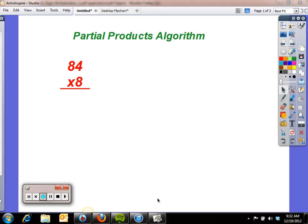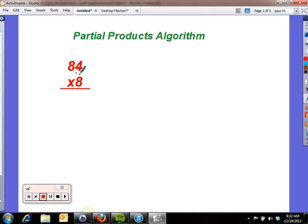So what we do with partial products is, for example, this problem here, 84 times 8. We have to think of 84 as 80 plus 4, and we're going to multiply separately.